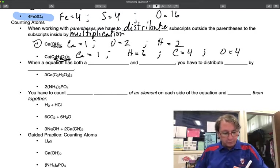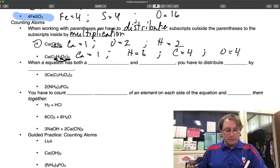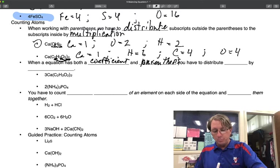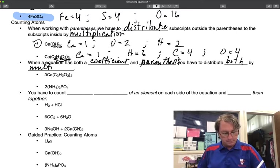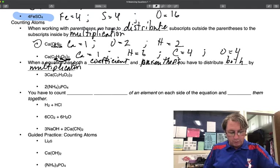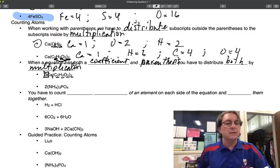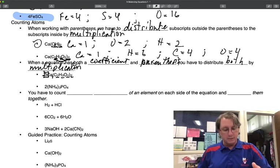Another difficulty: what about when a formula contains both a coefficient and parentheses? In this case, you have to distribute both, again, by multiplication. So I have a one as a subscript for calcium, a two for carbon, a three for hydrogen, a two for oxygen. And then I have two other numbers: a coefficient three, and an outside subscript two. So every single thing is going to be multiplied by three, including the calcium. But all the ones in parentheses will be multiplied by two, and by three.